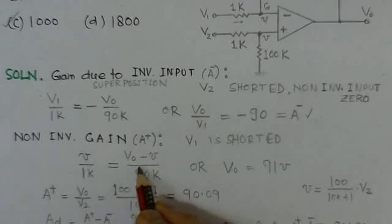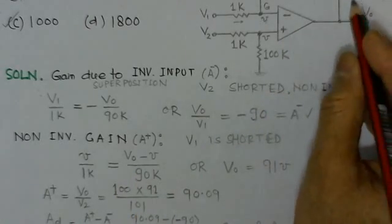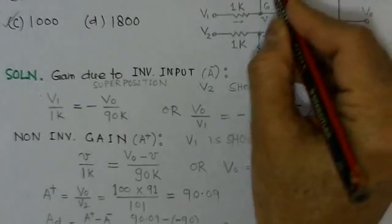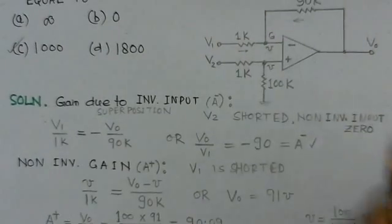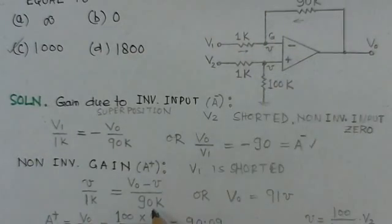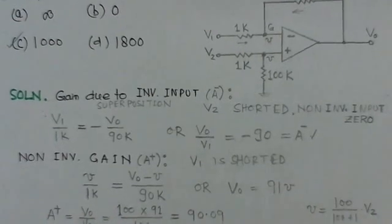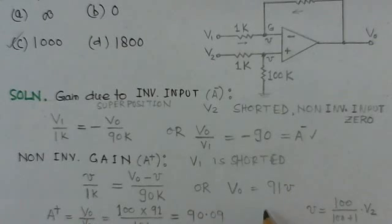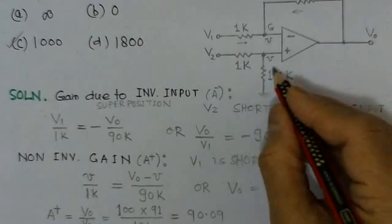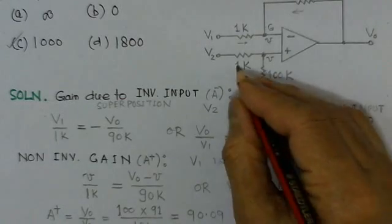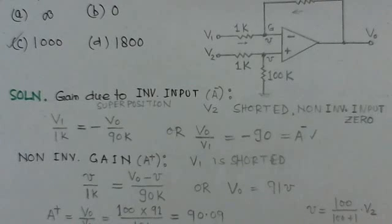Applying KCL at node G gives: V over 1kΩ equals (V0 minus V) over 90kΩ. Solving this, V0 comes out to be 91V. The value of V itself is determined by the voltage divider at the non-inverting input: V equals (100k / (100k + 1k)) × V2, which gives V in terms of V2.